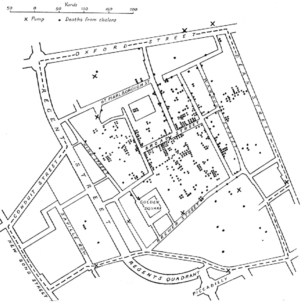Spatial analysis can perhaps be considered to have arisen with early attempts at cartography and surveying, but many fields have contributed to its rise in modern form. Biology contributed through botanical studies of global plant distributions and local plant locations, ethological studies of animal movement, landscape ecological studies of vegetation blocks, ecological studies of spatial population dynamics, and the study of biogeography.